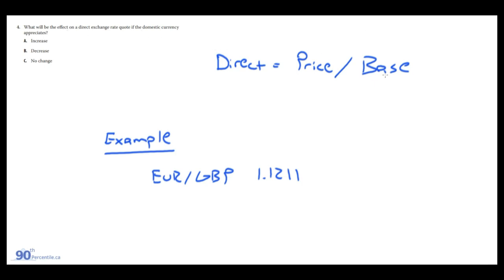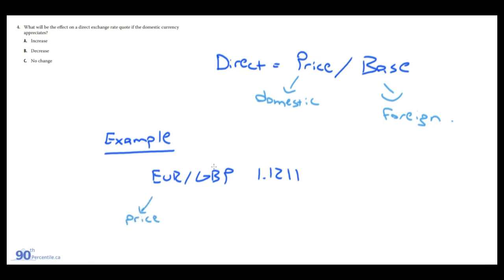A direct quote displays the price currency as the numerator and the base currency as the denominator. In a direct quote, the price currency is domestic and the base is the foreign currency. For example, a company in Paris — operations in euros, exchanging pounds — the euro is the price/domestic currency and pounds are foreign. This reads as: one pound costs 1.1211 euros.